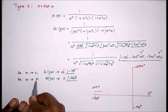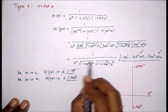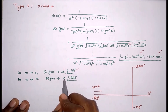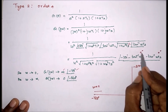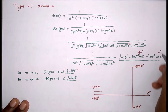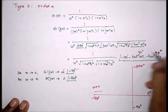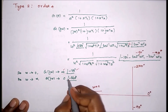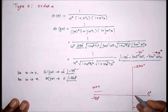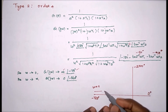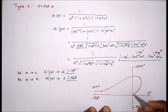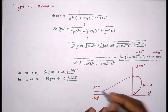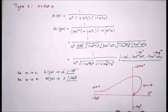Substituting ω = ∞: the magnitude becomes 1/∞ = 0. tan⁻¹(∞) = 90°, so the total angle = −180° − 90° − 90° = −360°, which is equivalent to 0°. Therefore at ω = ∞, the polar plot reaches the origin at 0°.